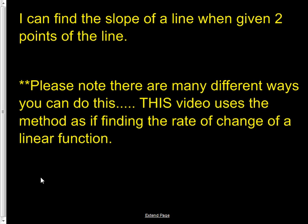This is always a confusing topic because people just forget the steps, and there are so many different ways to learn how to find the slope of a line when you're given two ordered pairs or two points on that line. However, what I've done is I've tried to relate how I taught you to find the rate of change for a linear function. So let's take a look at it.